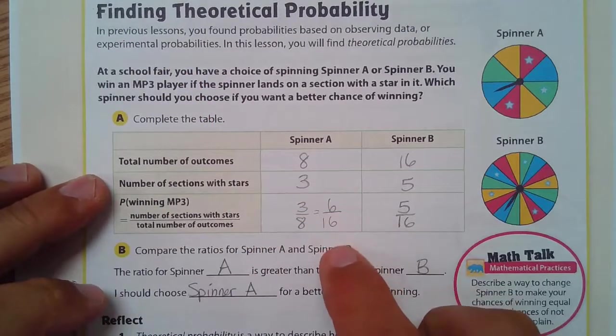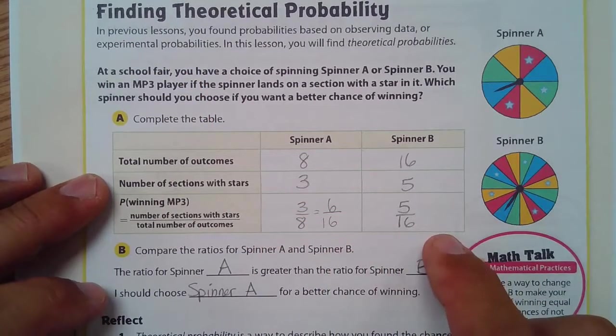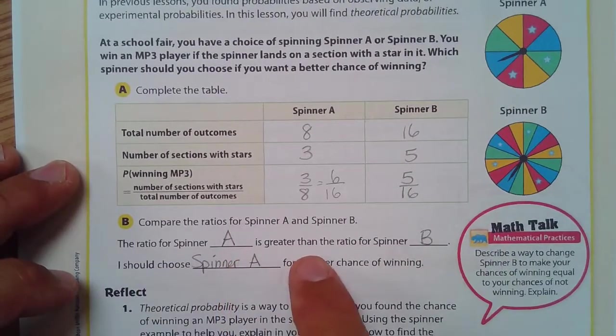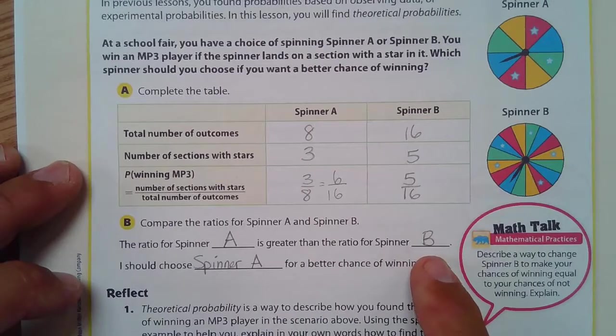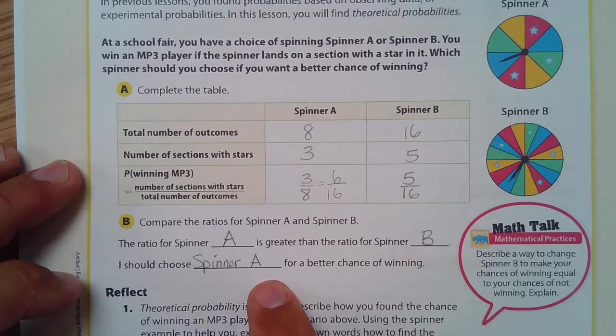So I can see that 6 out of 16 for this and 5 out of 16 for that. So spinner A has a greater ratio than spinner B. So I should choose spinner A for a better chance of winning.